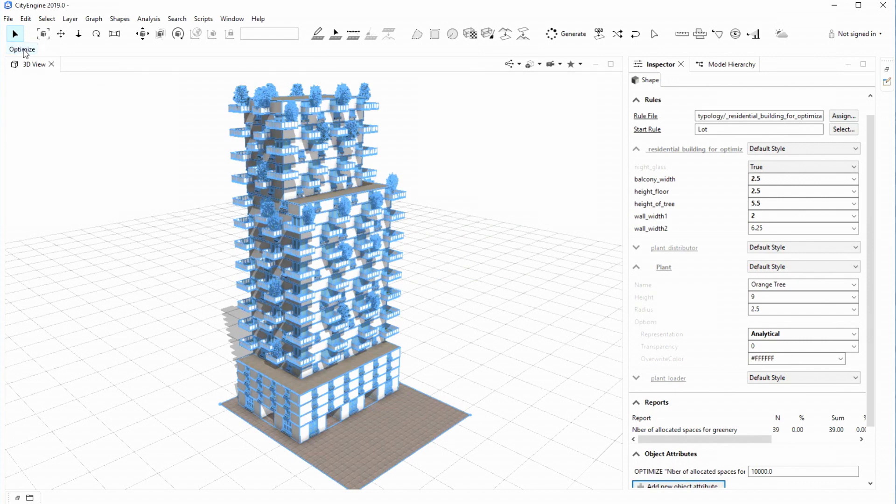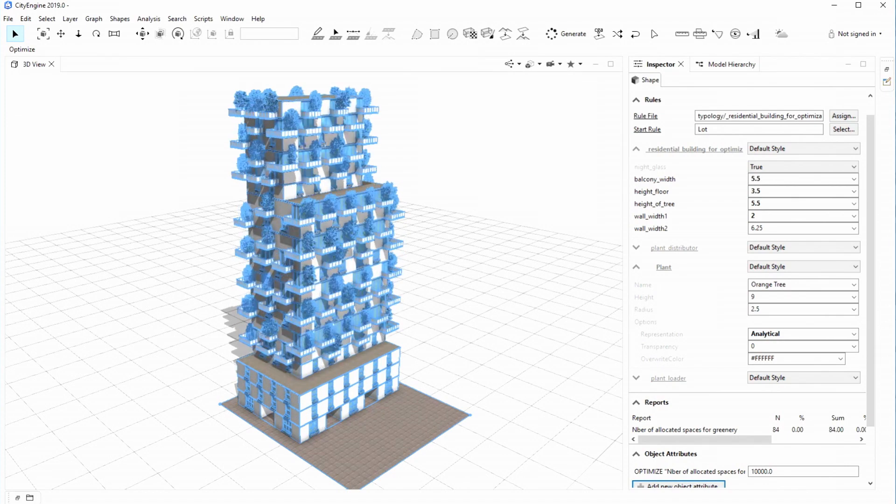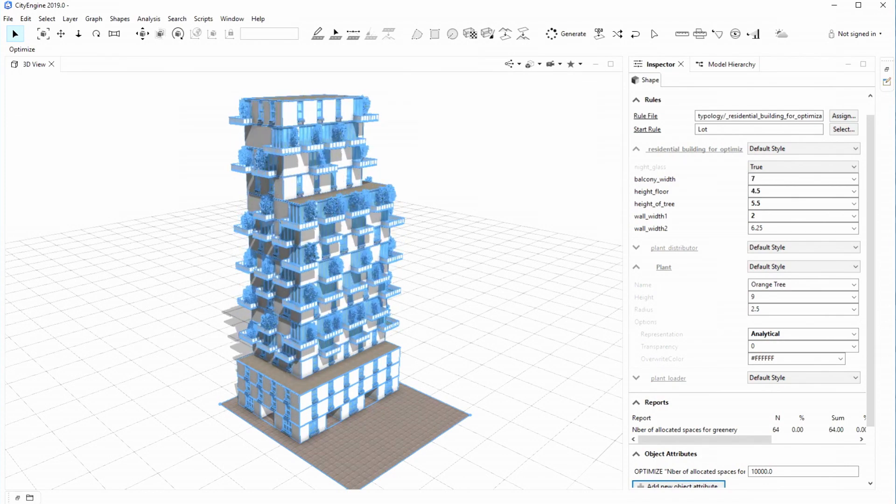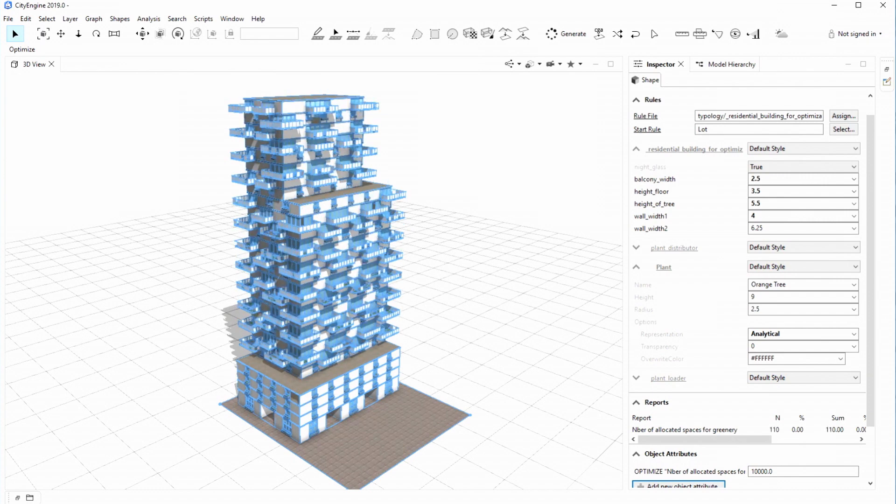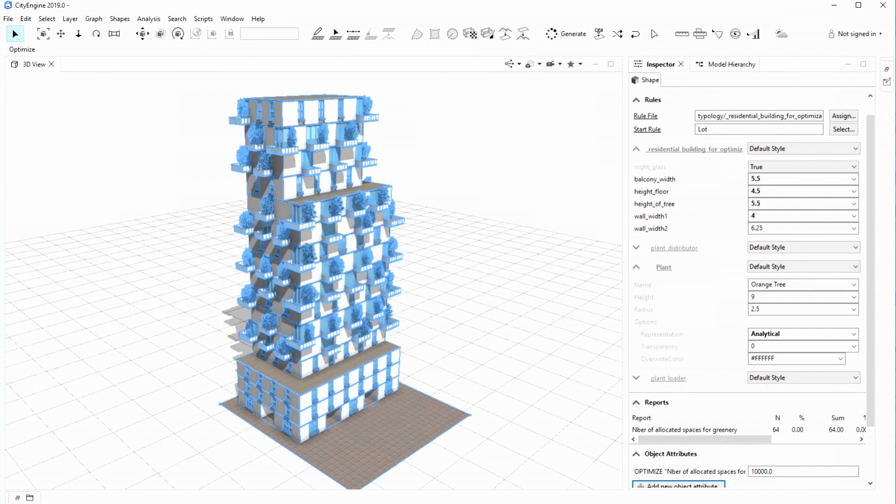And let's run the optimization tool. So while it's running I can explain a little bit more what it's doing. The tool is now going through many different attribute combinations and computing the resulting number of trees on this building.